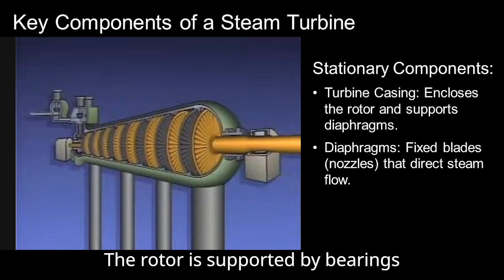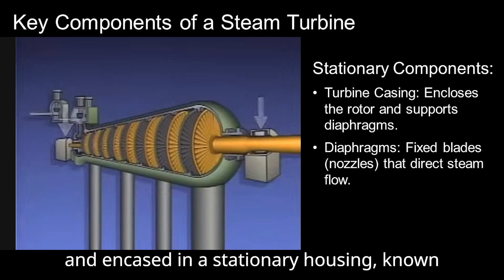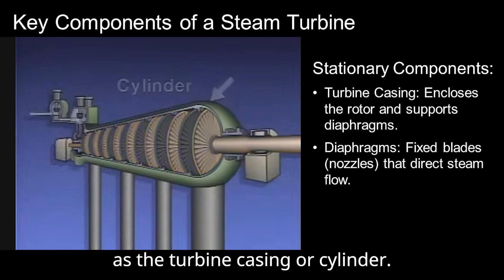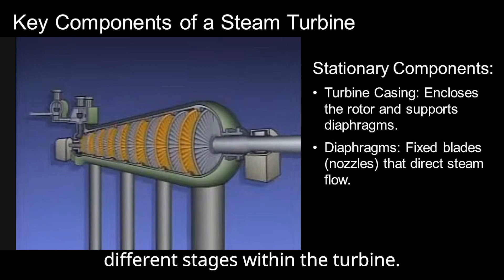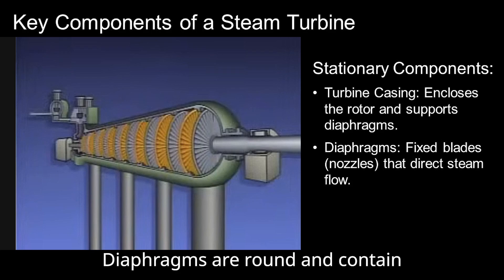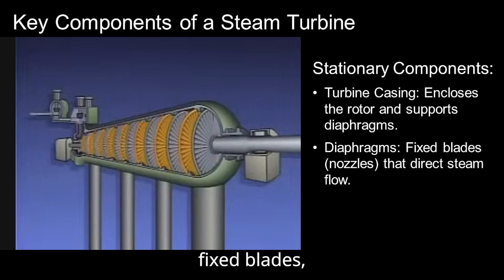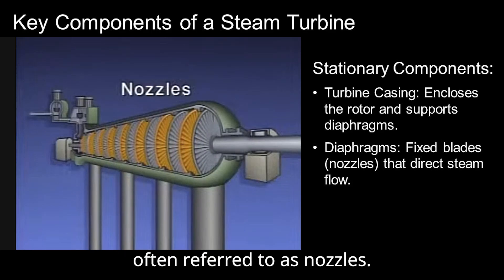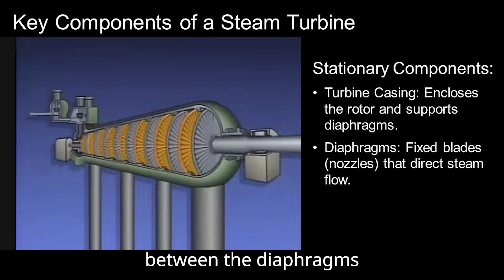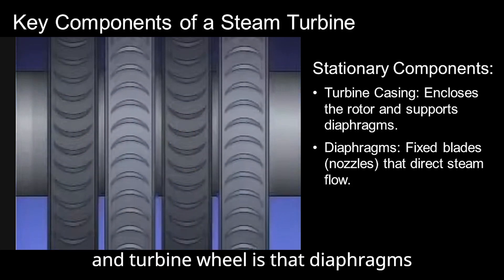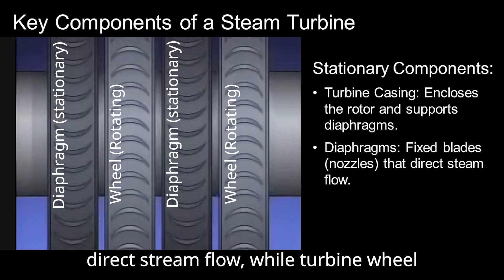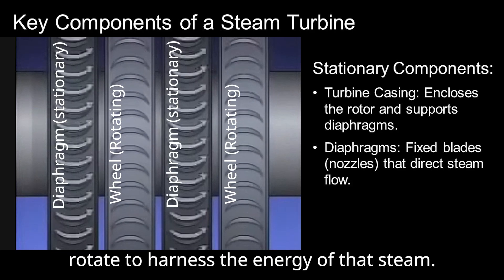The rotor is supported by bearings and encased in a stationary housing, known as the turbine casing or cylinder. This casing houses the diaphragm, which separates different stages within the turbine. Diaphragms are round and contain fixed blades, often referred to as nozzles. The key difference between the diaphragms and turbine wheels is that diaphragms direct steam flow, while turbine wheels rotate to harness the energy of that steam.